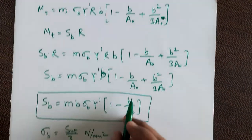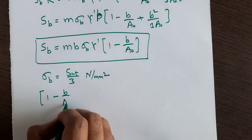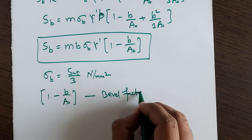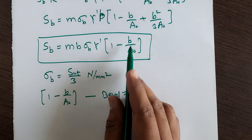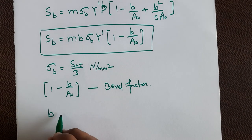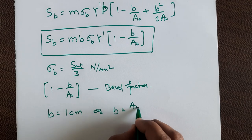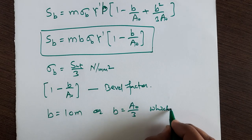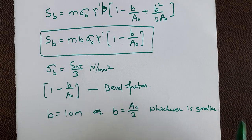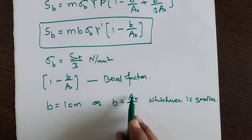The term (1 - b/a₀) is called the bevel factor. The face width is generally considered as 10·m (10 times the module) or a₀/3, whichever is smaller. You must take the smaller of these two values for the face width.